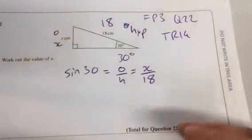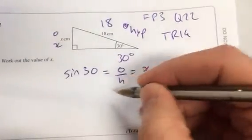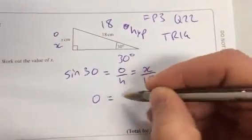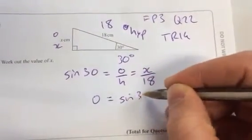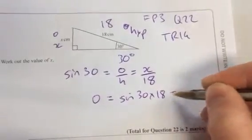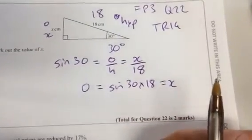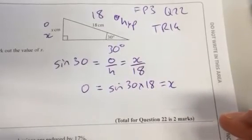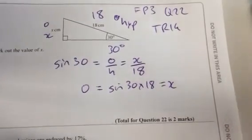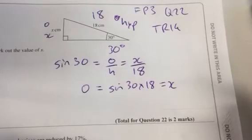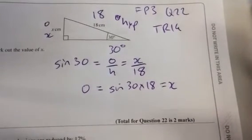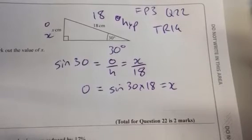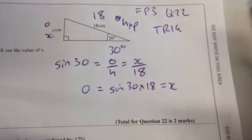So you can rearrange it to make it the opposite equals sine 30 times 18. And what is sine 30 times 18? It's a calculator paper, so someone can use their calculator. Sine 30 times 18.